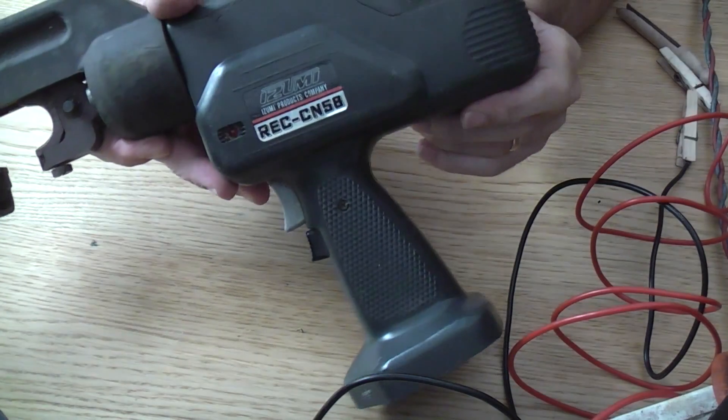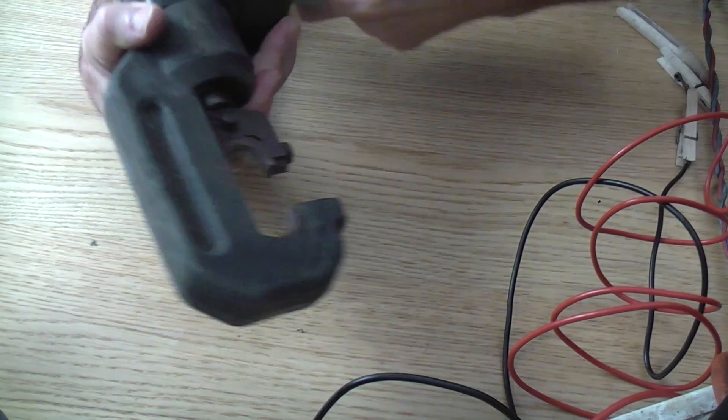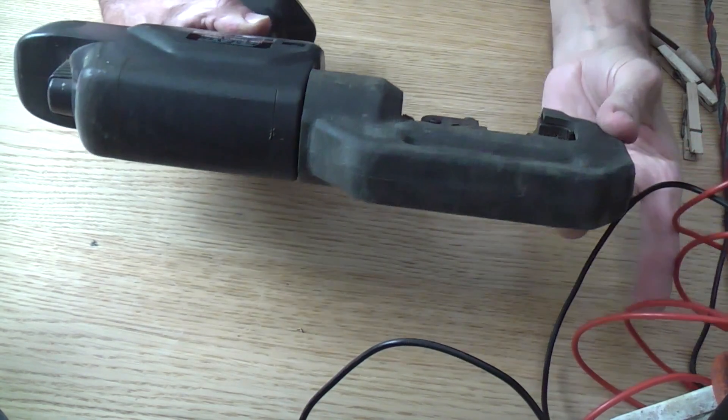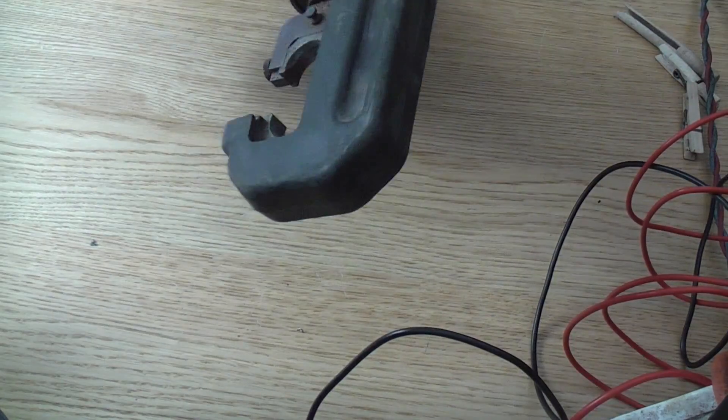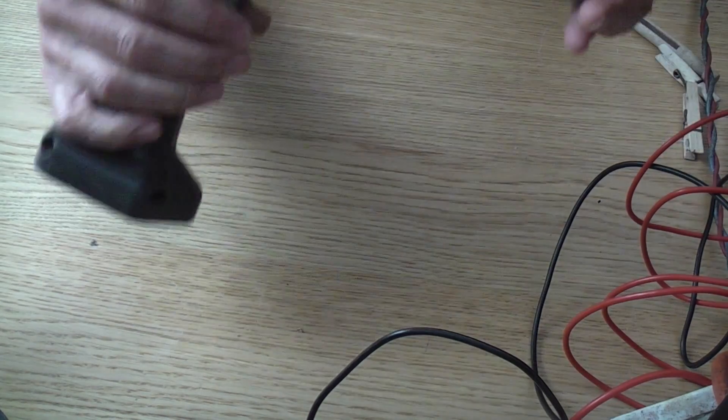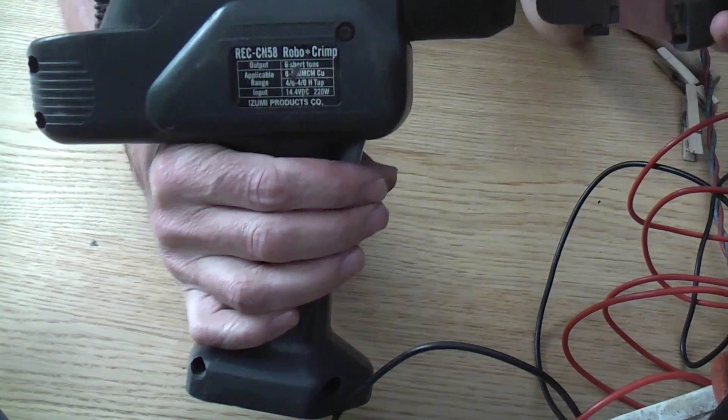Hello. What we've got here is the REC C958 and that, as you probably know, is a Robo-crimp. See? See that? Robo-crimp.